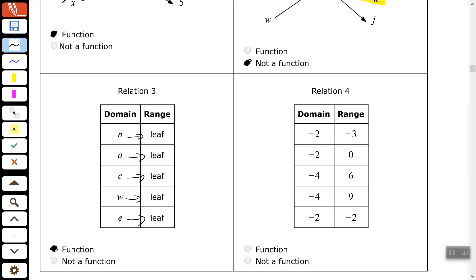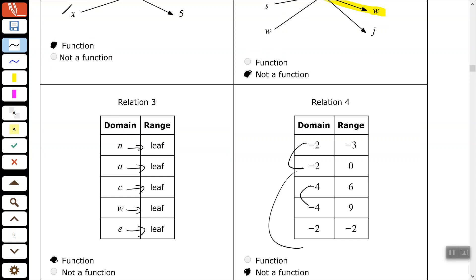Relation 4: negative 2 is paired with 3, but negative 2 is also paired with 0, and negative 2 is paired with negative 2. Therefore it's not a function, and negative 4 is paired with two different numbers as well. This is not even close to being a function. All righty, good people. Hope you found this video to be helpful, and I will see you on the next one. Thank you.